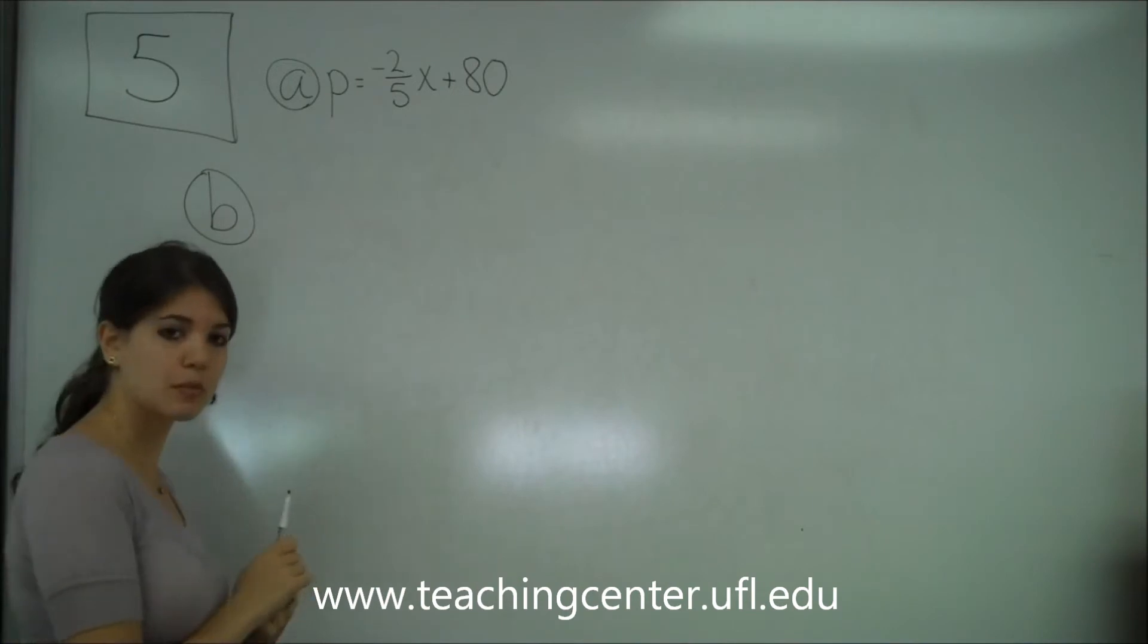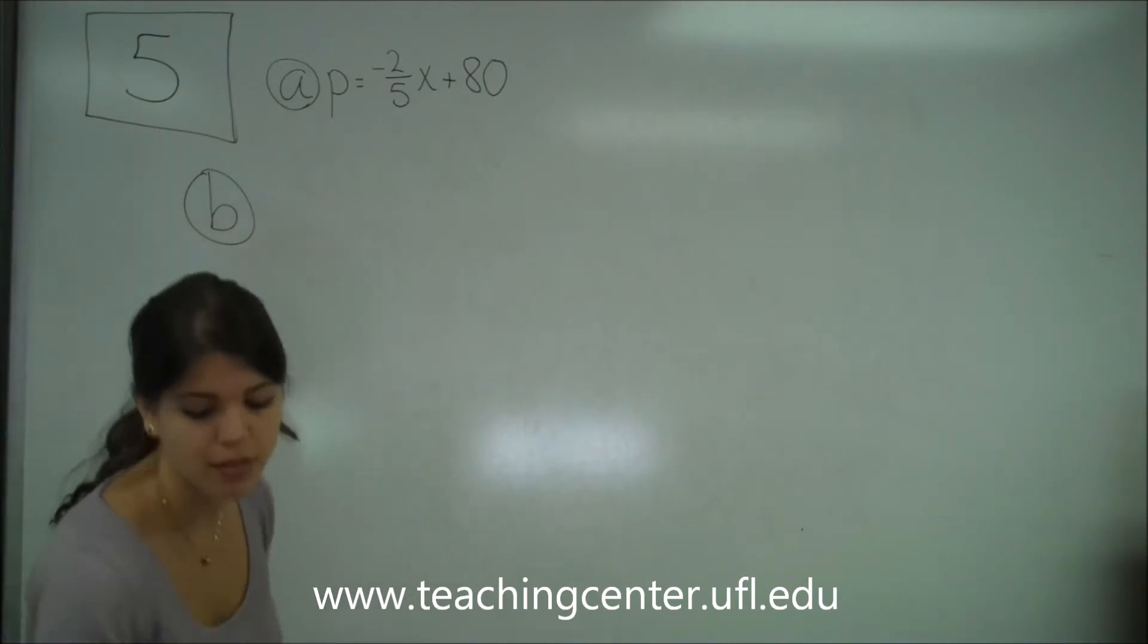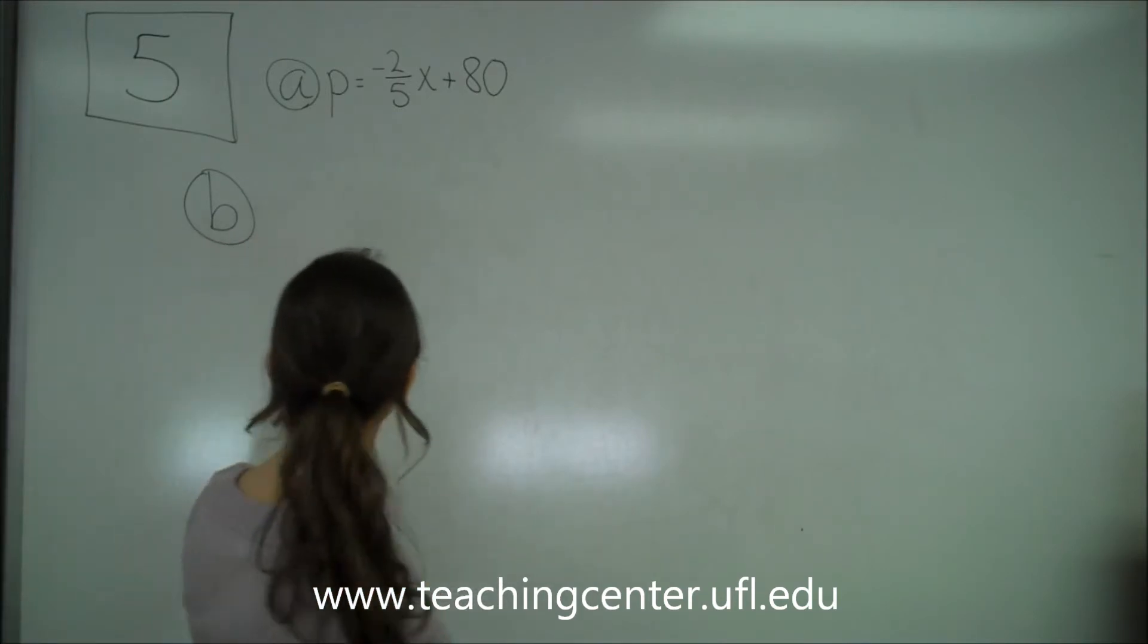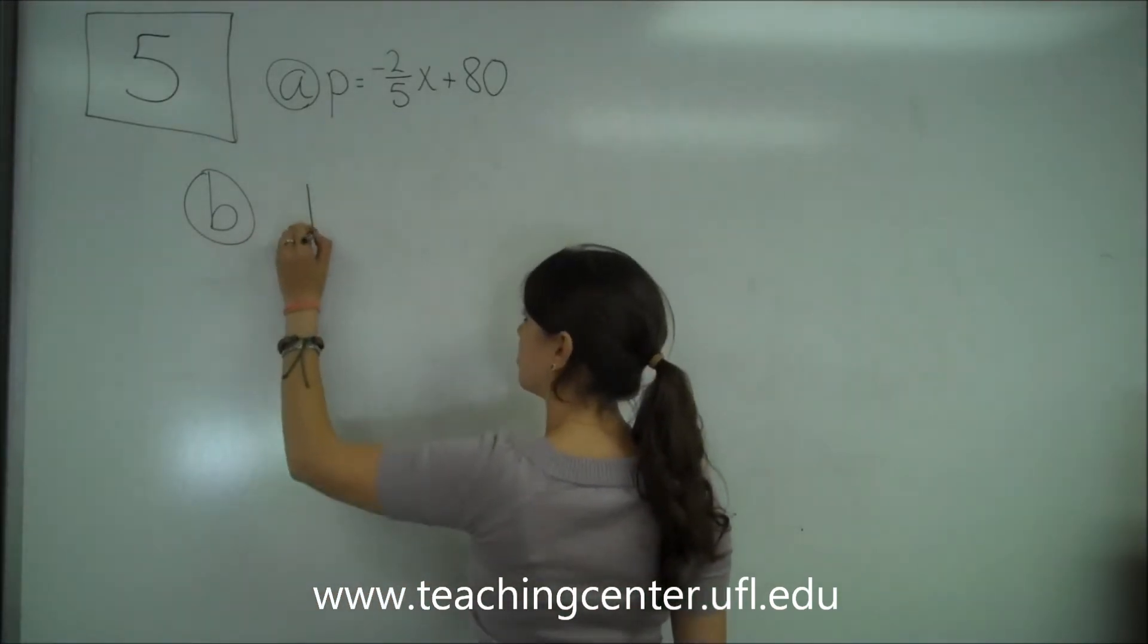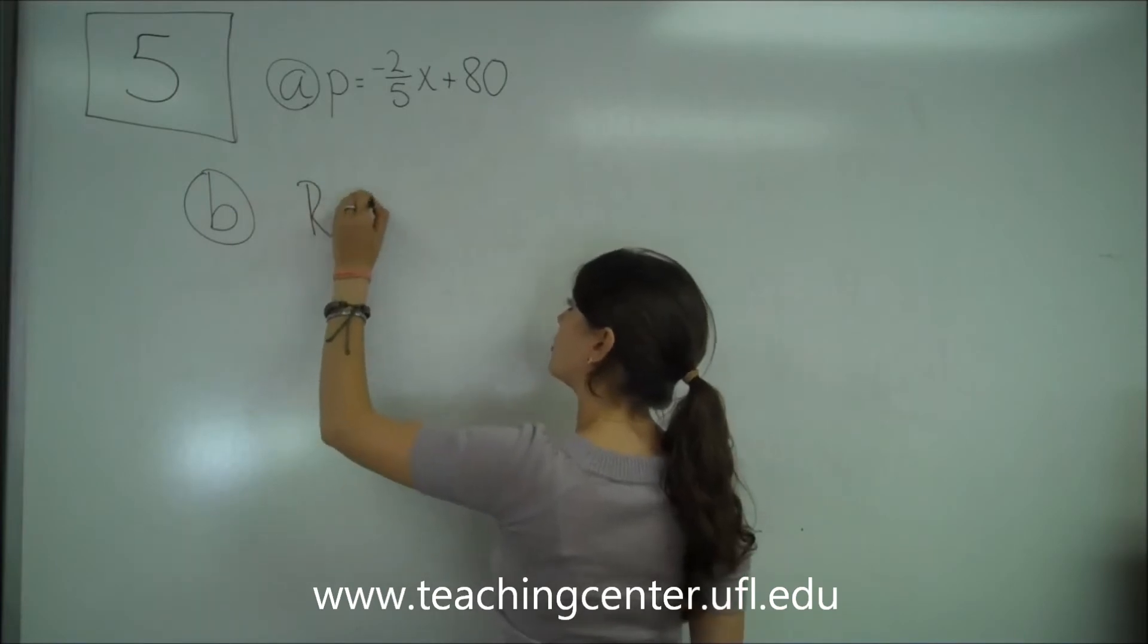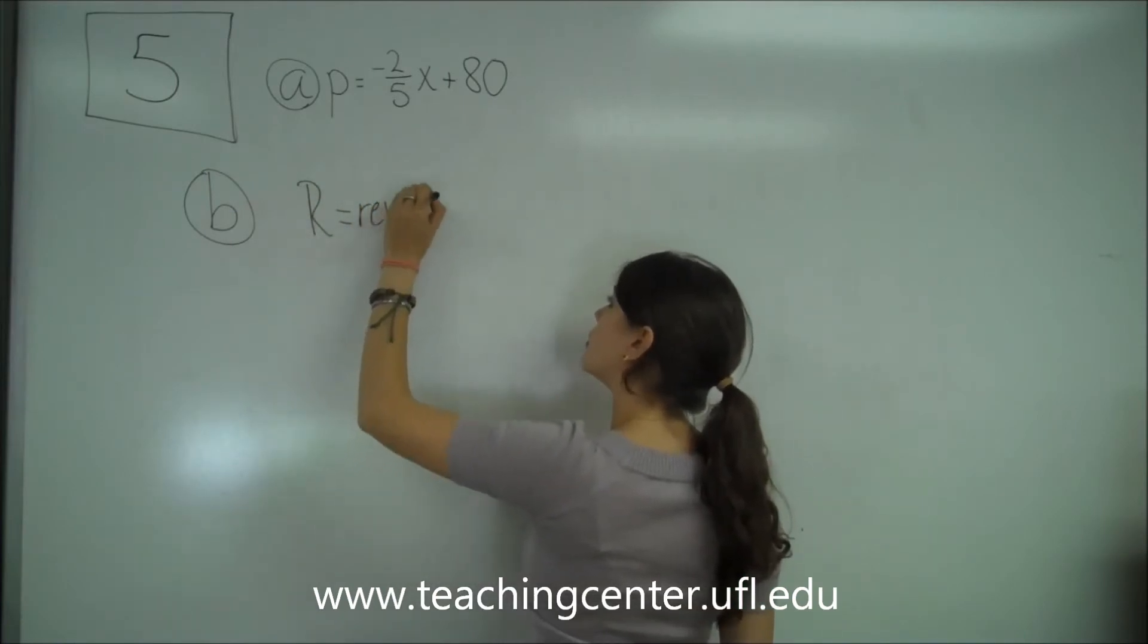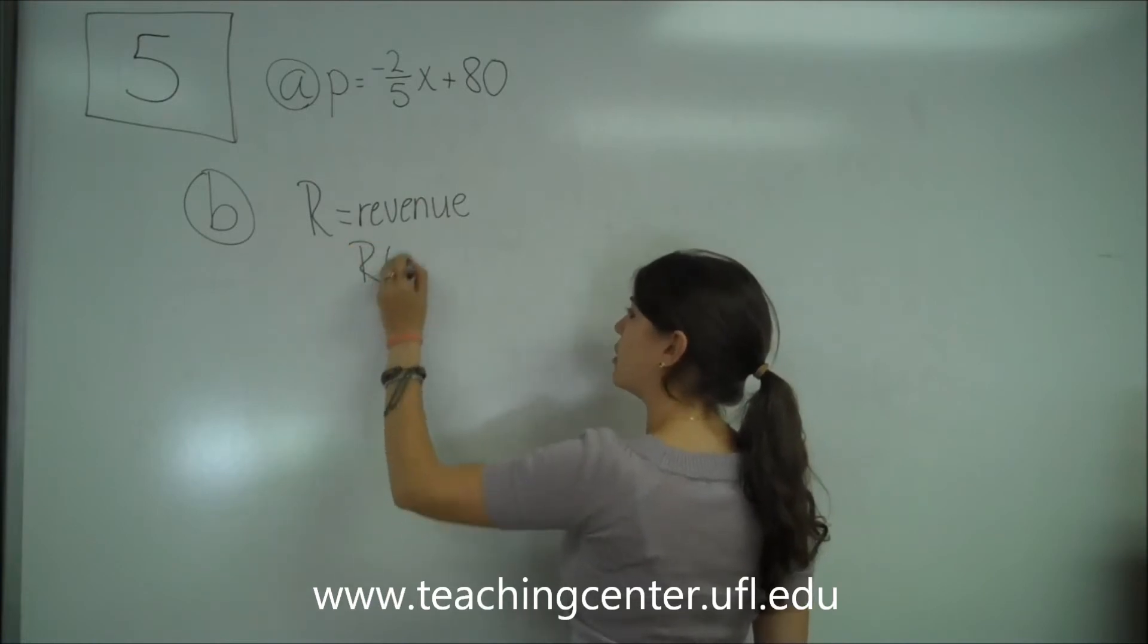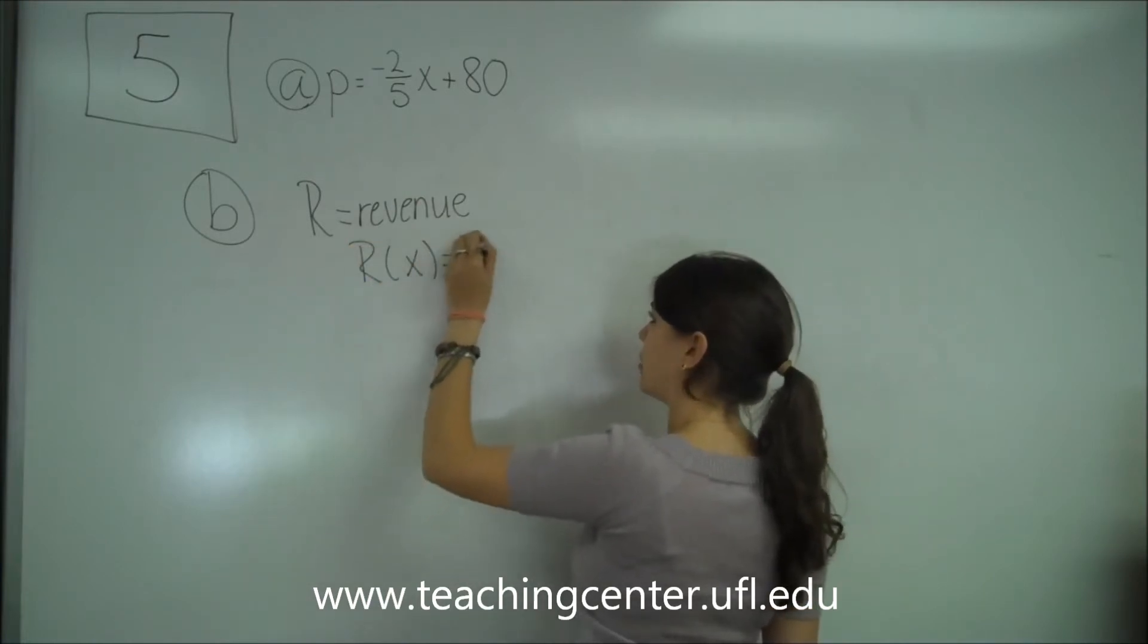And now we're moving on to part B which asks, express the revenue R in terms of X. So we're finding R in terms of X. What is that?